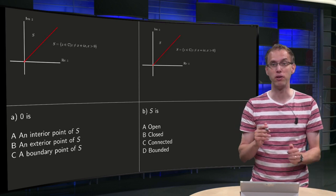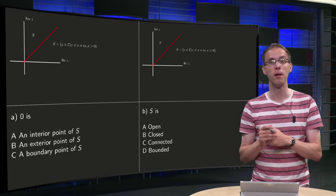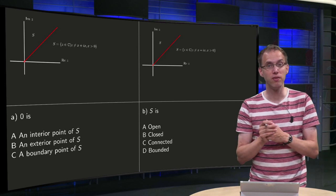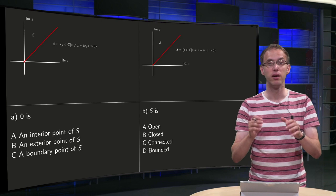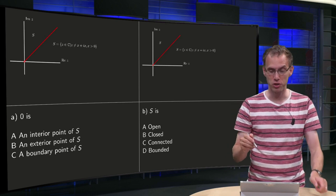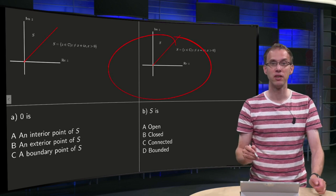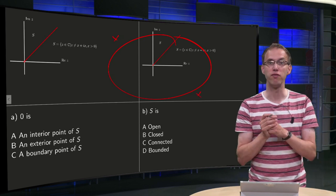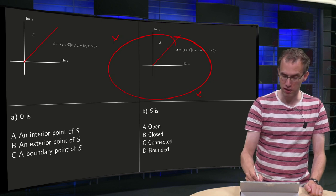Let's take a look at bounded first. Bounded is what you intuitively think it is — the definition is that you can make a disk around the set which contains the whole set. Let's try to make a big disk here: do we have all of S? No, you can go outside and still have points of S. So our set is definitely not bounded.